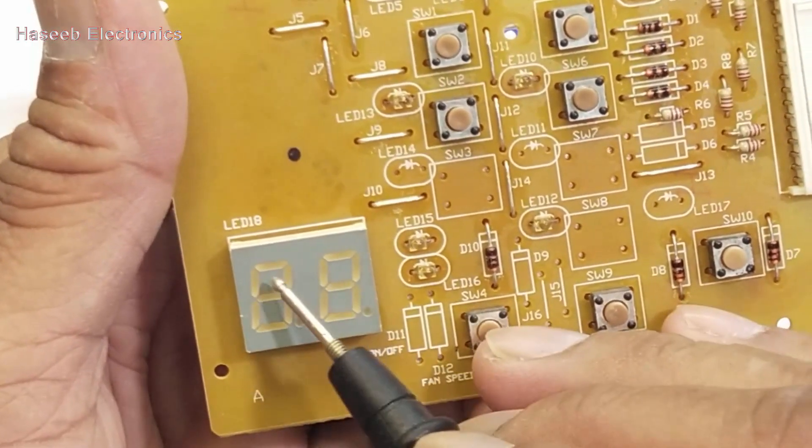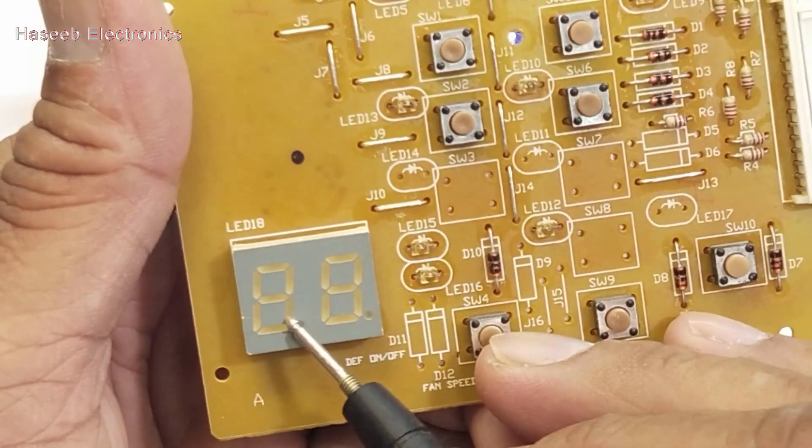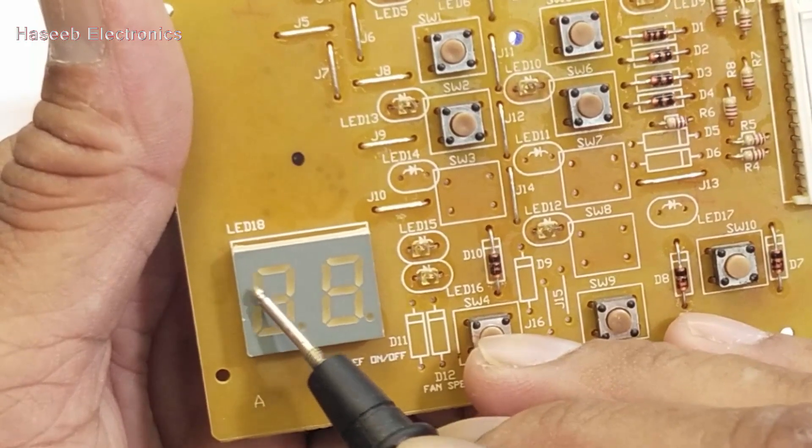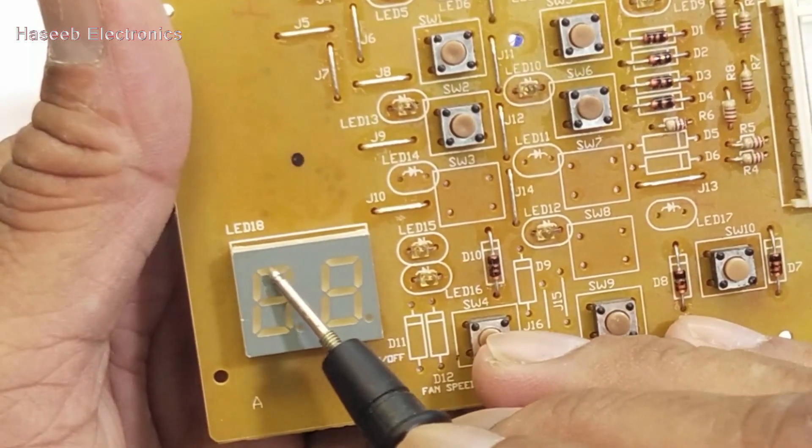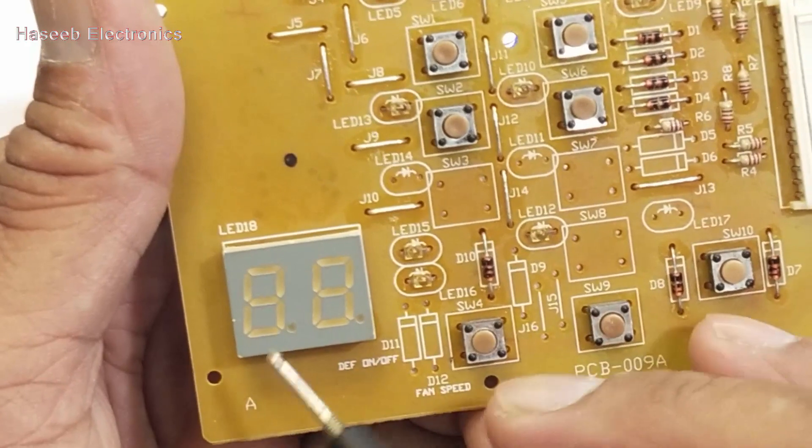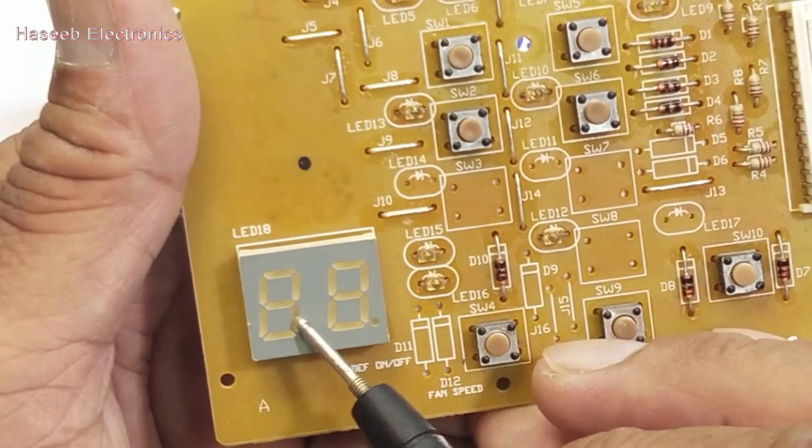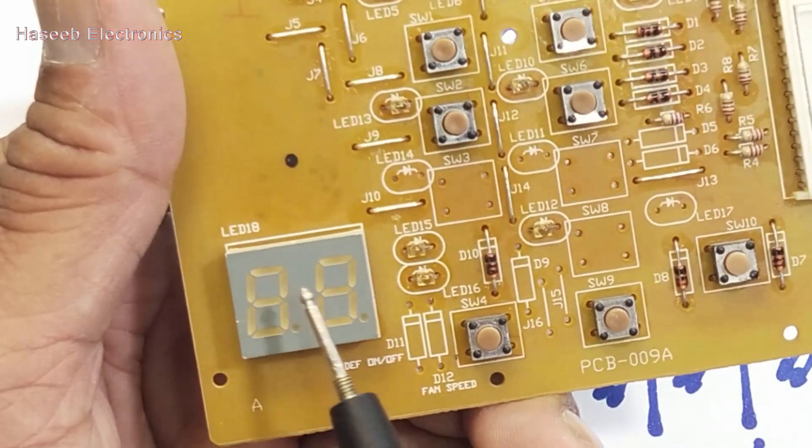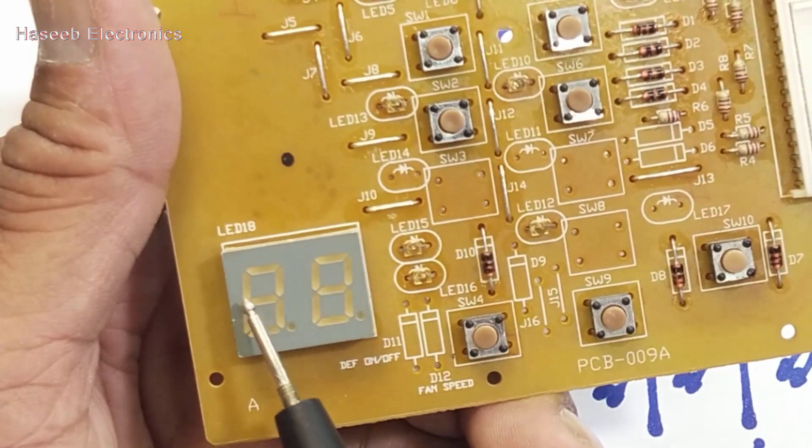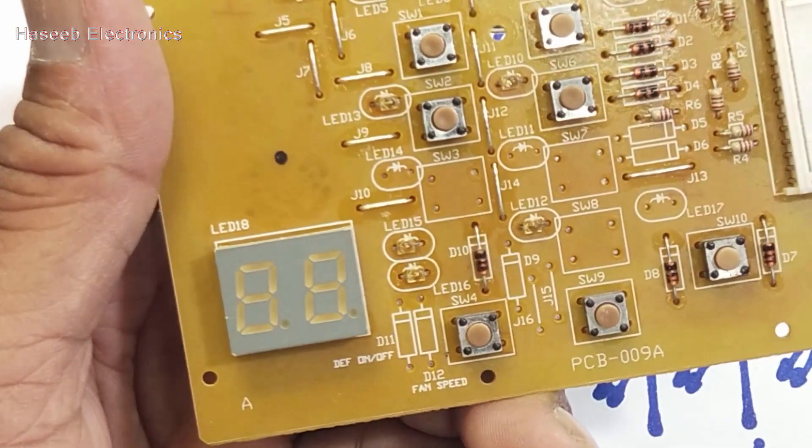So D1, D2, A, B, C, D, E, F, G. We can say one, two, three, four, five, six, seven. It is composed of seven LEDs - seven LEDs here, seven LEDs here, so it has total 14 LEDs. These are two separate displays.